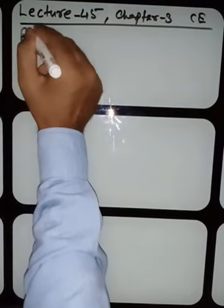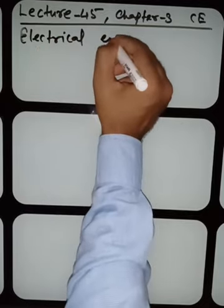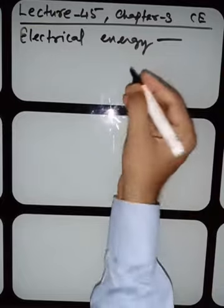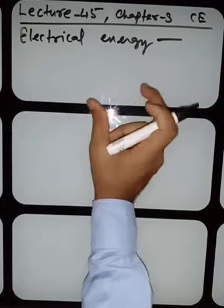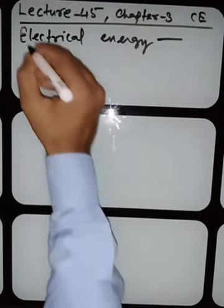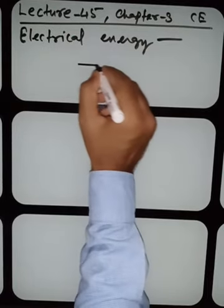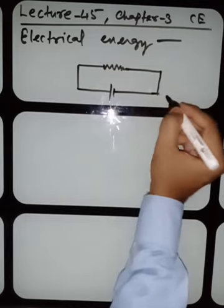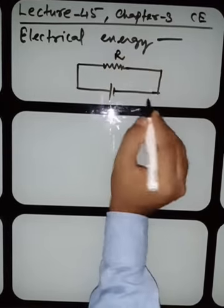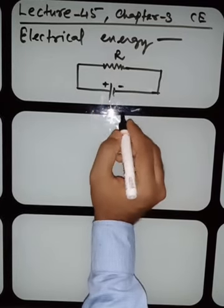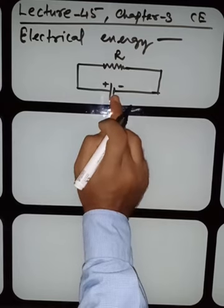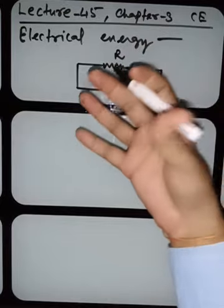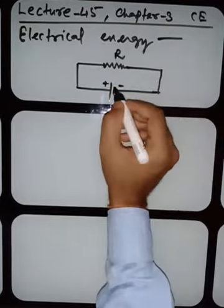We are going to start with electrical energy. To understand this, let me discuss with a very simple thing. I adopt this particular concept from a teacher — it was very fantastic, that's why I am discussing it here. One resistance is connected with the source of EMF, that is the battery or the cell. The resistance is R.